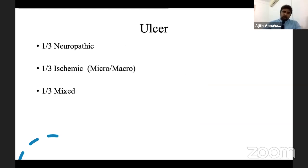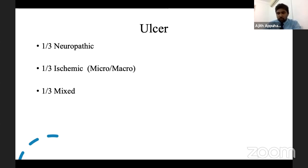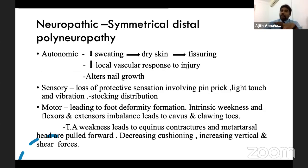You need to know about two main things in diabetic foot: the diabetic ulcer and the diabetic deformed foot. These ulcers can be three types: one-third neuropathic ulcers, one-third ischemic ulcers due to macro and microischemia, and one-third mixed. Mechanical ulcers are also possible in diabetic foot because of abnormal foot architecture, bony prominences, and higher chance of trauma.